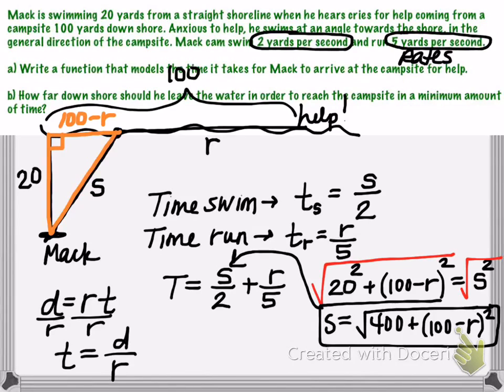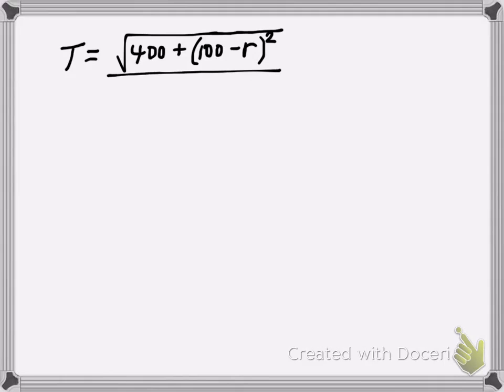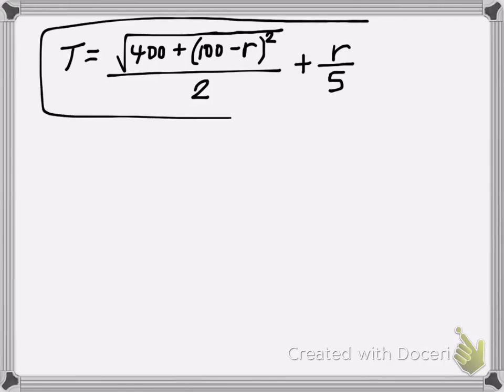And so now we're going to take this equation for S and we are going to substitute it into my time equation. And then we'll just have an equation that has one input and one output. So we now have T is equal to the square root of 400 plus the quantity 100 minus R squared. That's all divided by 2 plus R over 5. So this is our model.